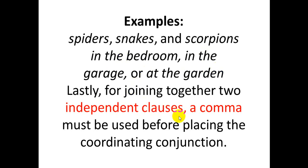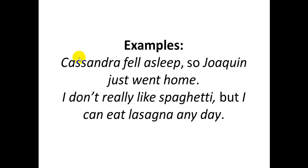When joining independent clauses, we use a comma before the coordinating conjunction. Example: 'Kassandra fell asleep, so Jaguan went home.' Another example: 'I don't really like spinach, but I can eat lasagna any day.' We use a comma to separate the two independent clauses.